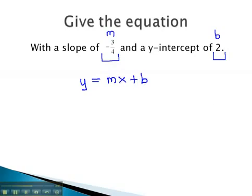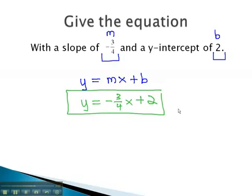Plugging in what we know, we get y is equal to m, or the slope, negative 3 fourths, x, plus b, which is 2. This is the equation of the line that will have a slope of negative 3 fourths and a y-intercept of 2.